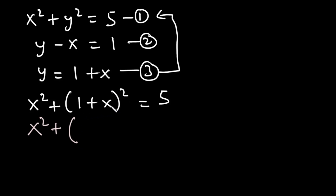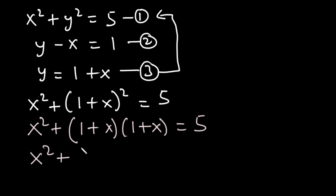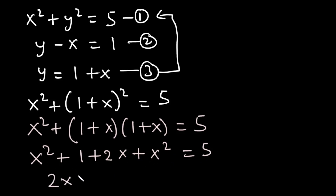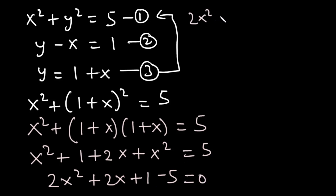(One plus x) all squared is the same as (one plus x)(one plus x). Expanding: one times one is one, one times x is x, x times one is x, so x plus x is two x, and x times x is x squared. Combining with the existing x squared gives two x squared plus two x plus one minus five, which equals zero. So we have two x squared plus two x minus four equals zero. Since two is common to each term, factoring out two gives x squared plus x minus two equals zero.